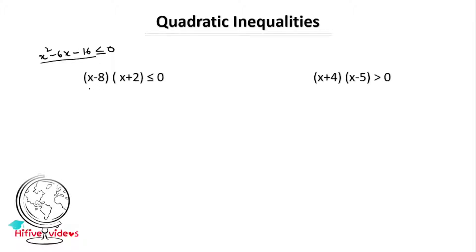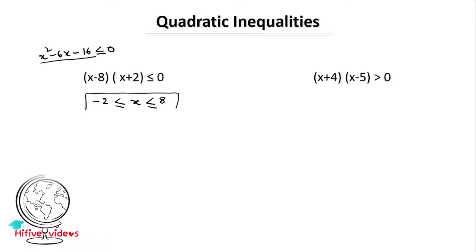Now what we need to do is find the x values that satisfy less than or equal to 0, or greater than 0. Now, if we convert this into factored form, we can do the factoring method. We need to find x values. For x minus 8 into x plus 2 less than or equal to 0, we can write x values from minus 2 to 8.